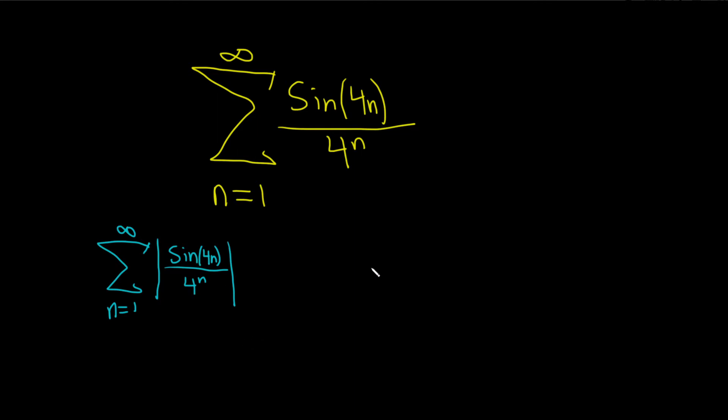So to look at this series, what we'll do is we'll try to compare it with a convergent series. So I'm going to take this piece here, sine of 4n over 4 to the n. And we want to show that this is less than or equal to the terms of a convergent series.